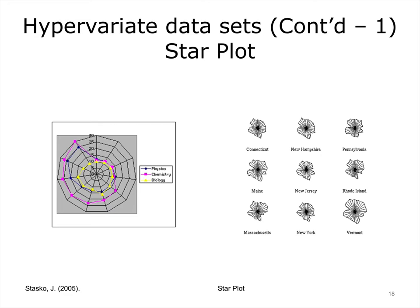Star plot is another way of visualizing sets with many variables. In this visualization, each variable receives its own coordinate axis, all coming from one central point. The small charts on the right show how star plots can be used to help monitor changes in many variables over time simultaneously.